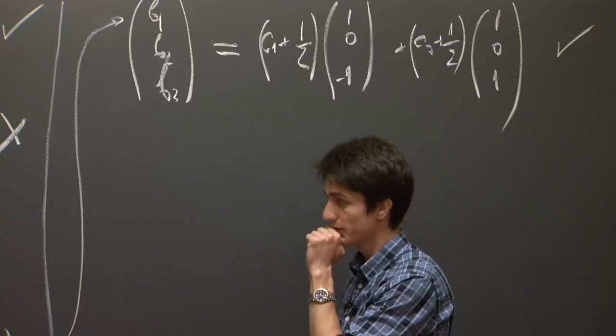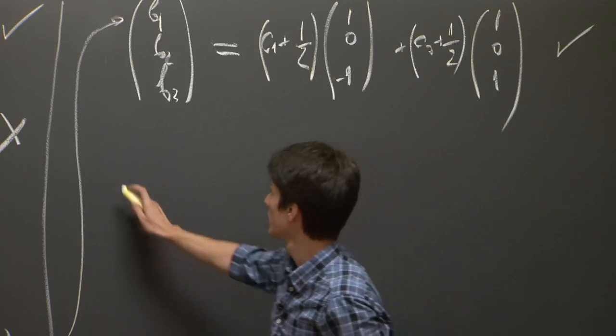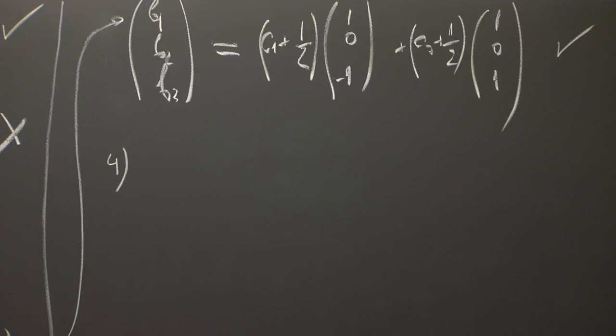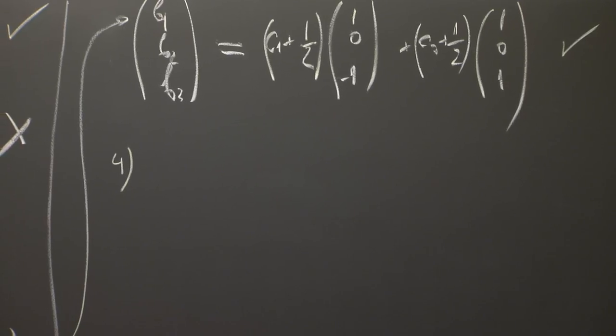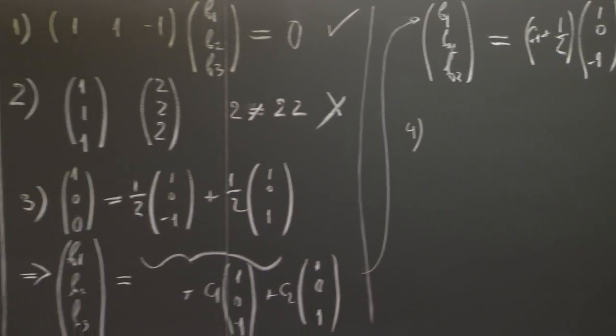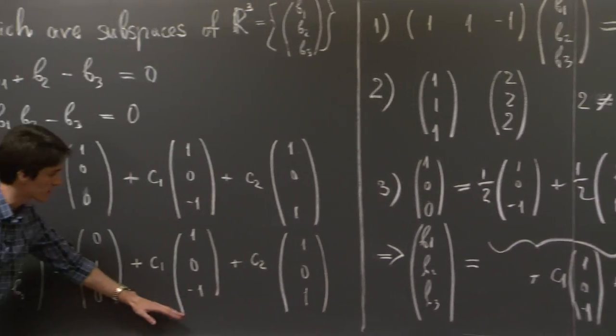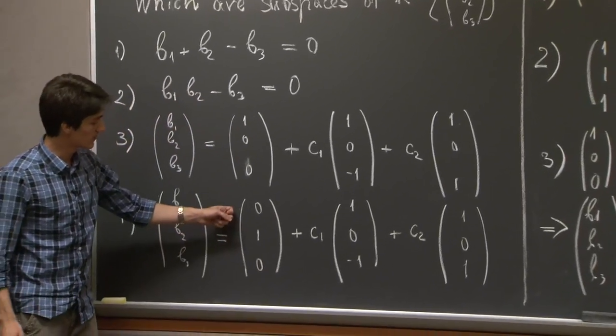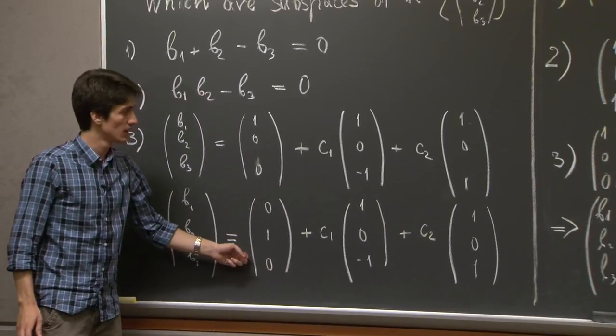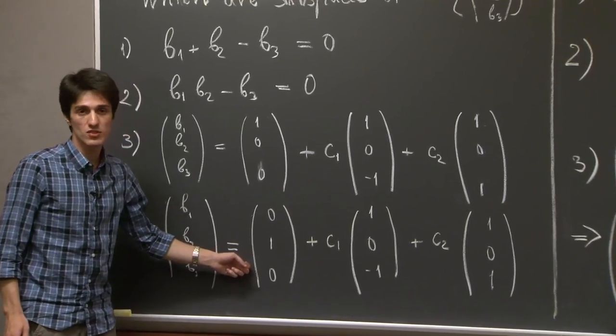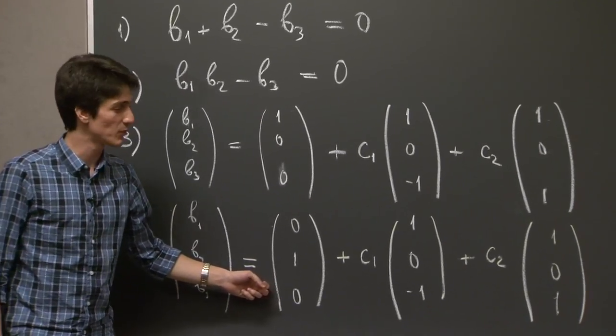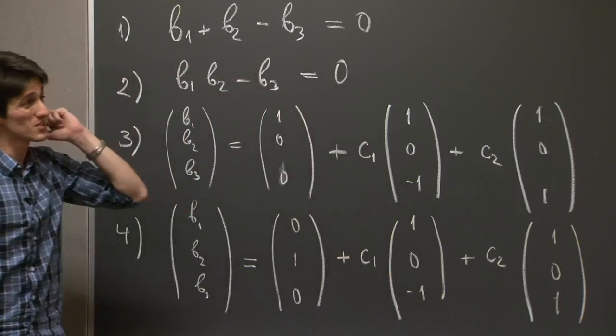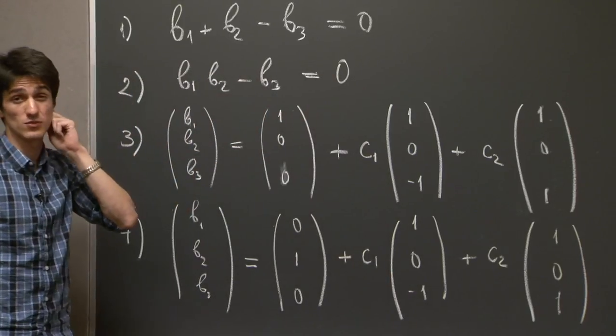And finally, let's look at number 4. We have a similar situation. We again have the linear span of precisely the same vectors as in question 3. But this time, we add the vector (0, 1, 0) to them. Now, (0, 1, 0) is not in the span of these two vectors. So the argument that we just showed for 3 doesn't work.